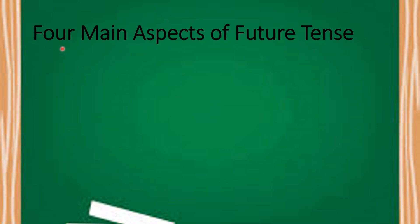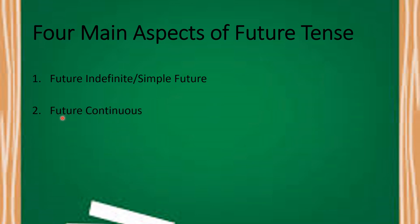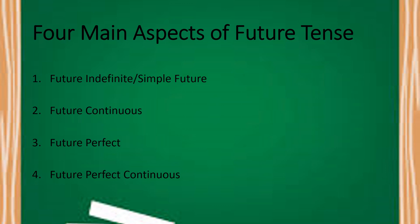Now, let's talk about the four main aspects of future tense. They are: number one, future indefinite, another name for which is simple future; number two, future continuous; number three, future perfect; and number four, future perfect continuous.